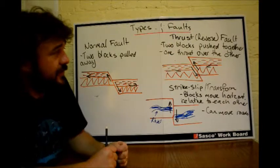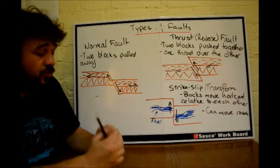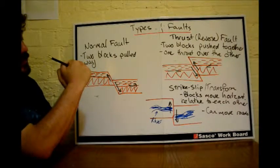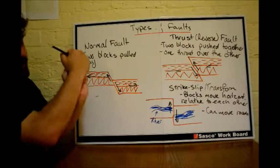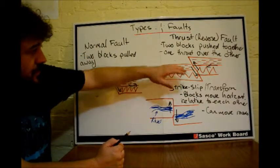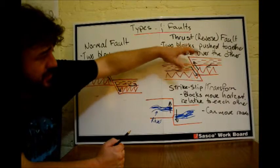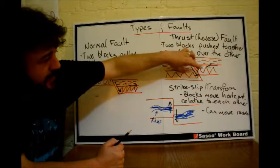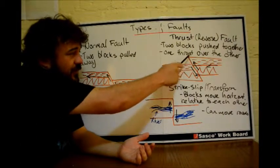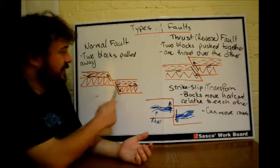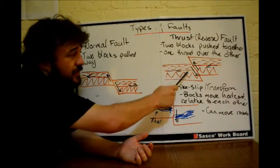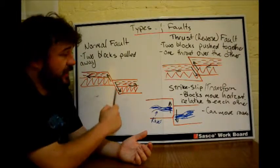The thrust, or reverse fault. So two blocks again, the crack's on an angle, they're pushed together. And what this means is one is thrust upwards and the other is thrust downwards. Or they're pushed, so thrust or pushed, up and down, and you get this sort of pattern. And you can see here they're moving, that one's moving up, that one's moving down, and then they're pushed together. And see here, you get that overhang compared to the sort of little hill there.